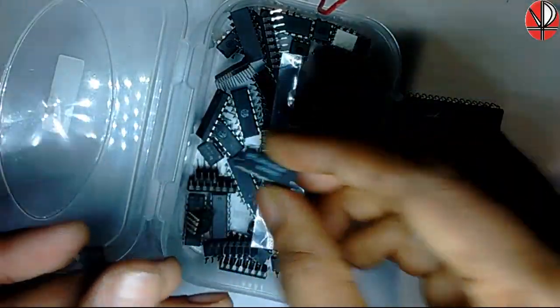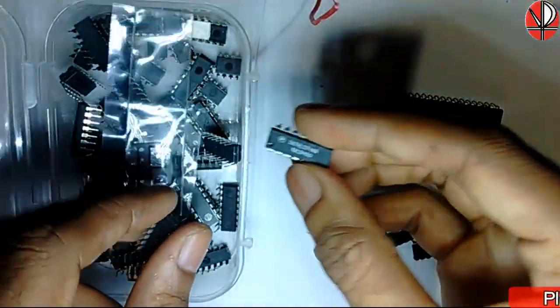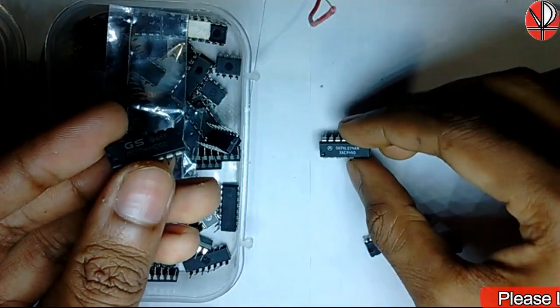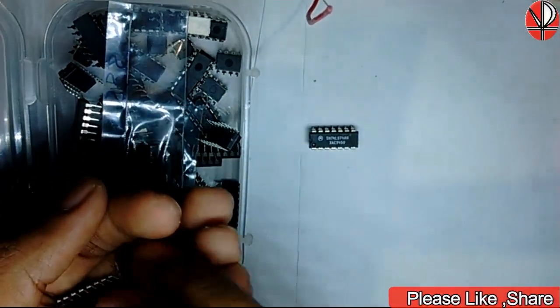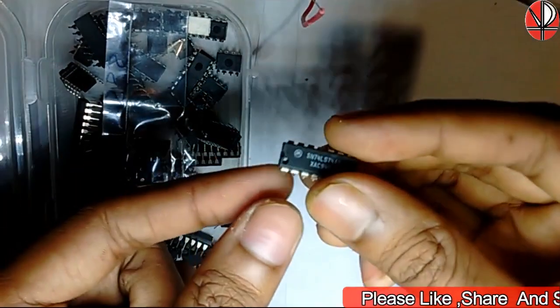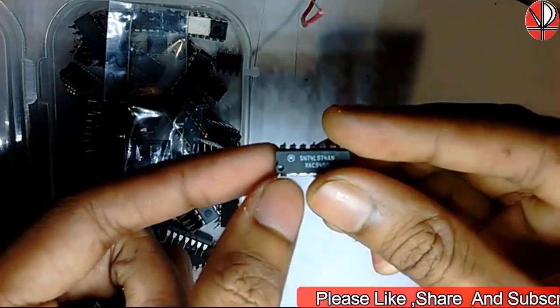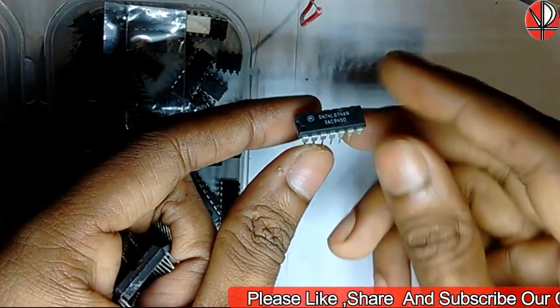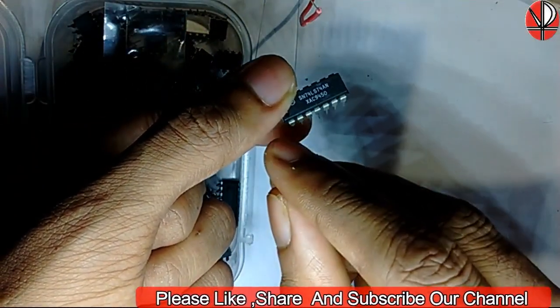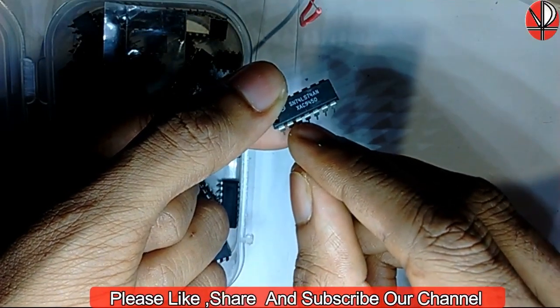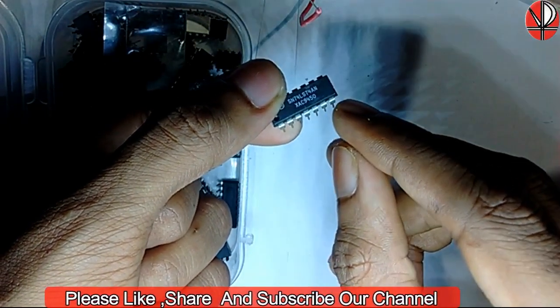So you have to look at the pin number. First, place the IC in front of you, keeping the notch mark towards the left side. Then you count from left side to right side as 1, 2, 3, 4, 5, 6, 7.